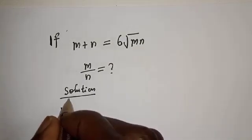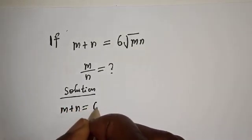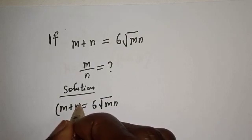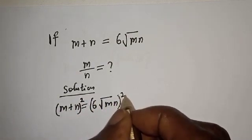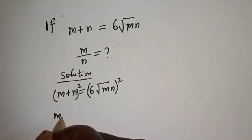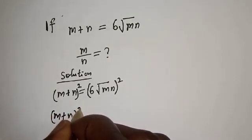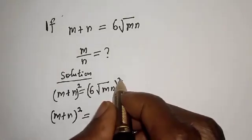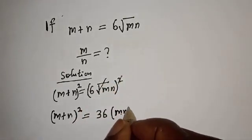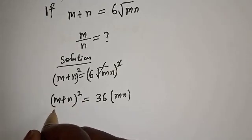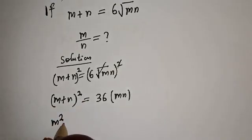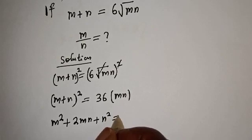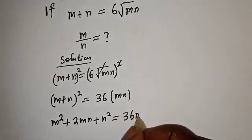We have m plus n is equal to six square root of mn. Now let's square both sides of this equation. m plus n squared is equal to 36 multiplied by mn. Expanding: m squared plus 2mn plus n squared is equal to 36mn.